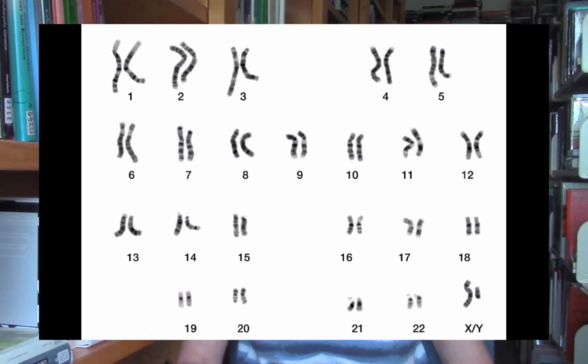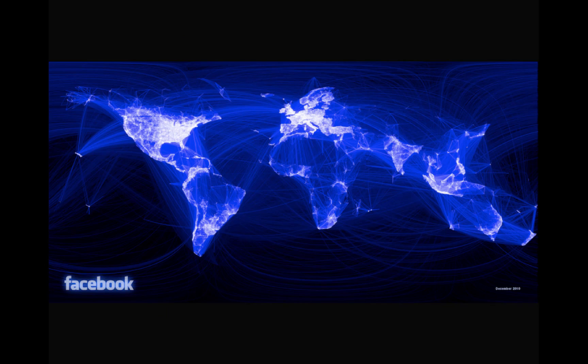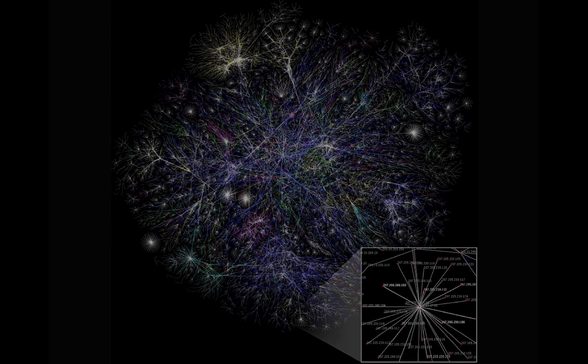Complex system science studies systems like these. Other examples of complex systems include the genome, the immune system, social networks, and even the World Wide Web, among many other examples.